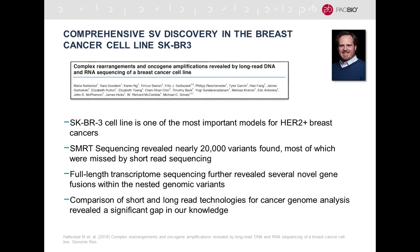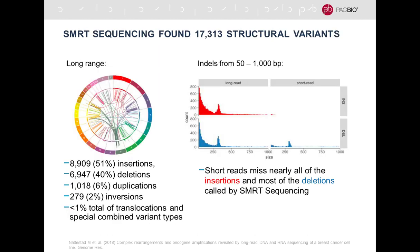Quite recently, a landmark paper by Mike Schatz comprehensively characterized a cancer genome for all types of genetic variation. He utilized the well-studied breast cancer cell line SKBR3, and in this Genome Research paper, used SMRT sequencing to reveal nearly 20,000 variants — most of which were missed by short-read sequencing. In addition, full-length transcriptome sequencing revealed several novel gene fusions and very complex genetic variants. This paper revealed a significant gap in our knowledge about the complexity of cancer genomes.